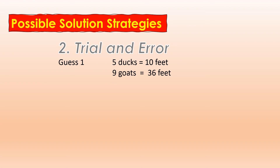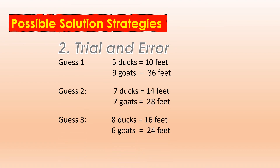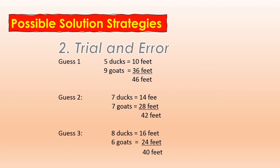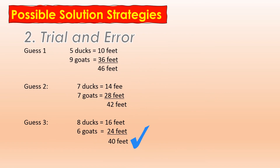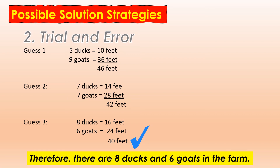We can also use the trial and error strategy. In this strategy, we will guess possible answers. These are the possible answers: 5 ducks and 9 goats have 46 feet; 7 ducks and 7 goats have 42 feet; 8 ducks and 6 goats have 40 feet. Therefore, there are 8 ducks and 6 goats in the farm.